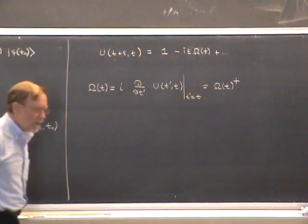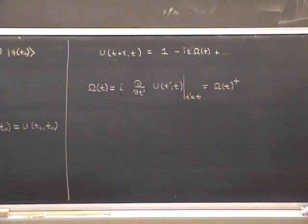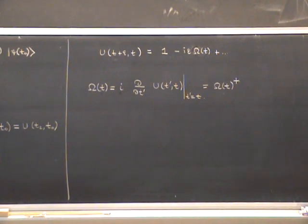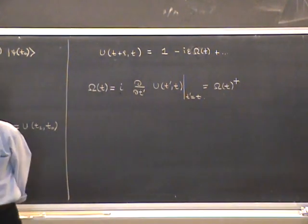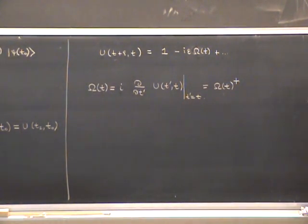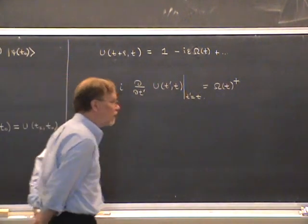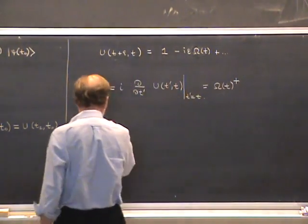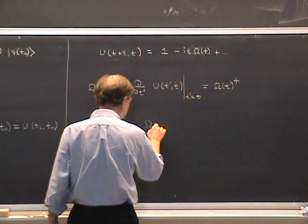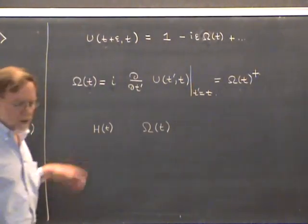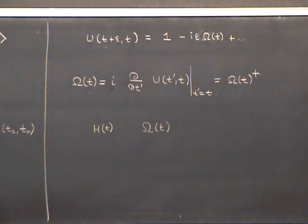In classical mechanics, the generator of time evolution is the classical Hamiltonian. The classical Hamiltonian plays a similar role — it can advance the observables of the system by an infinitesimally small time using the Poisson bracket. For these reasons, we suspect that the operator Omega should be closely related to the quantum Hamiltonian H, which we haven't yet defined. If we call it H, then H ought to be related to Omega, and since Omega depends on t, we expect H will also depend on t.